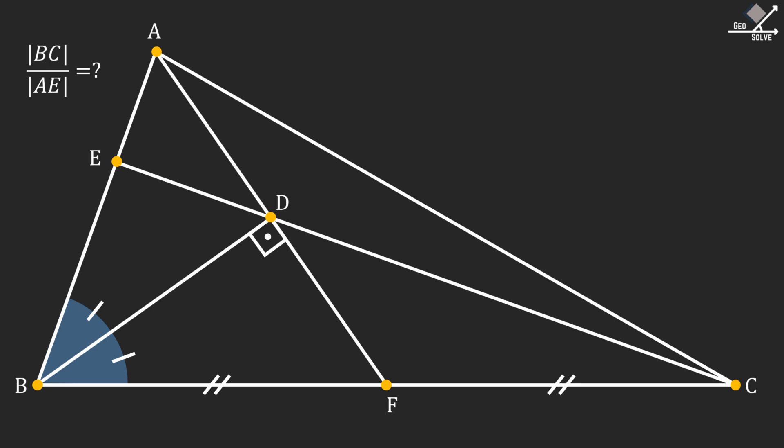First, let's extend the line segment BD and call the intersection point with line segment AC as G. And also let's construct a line segment connecting points E and G.